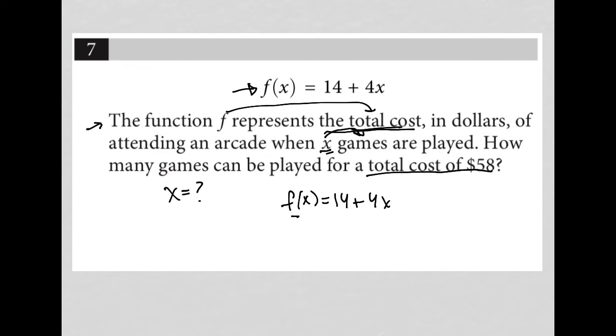But that total cost is 58. So I can rewrite the question as 58 equals 14 plus 4x. I know that x represents the number of games played. So all I'm doing now is solving for x.